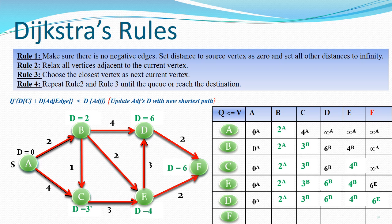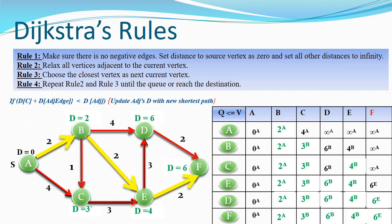We copy all existing values and this gives us our final shortest path. The shortest path from A to F is 6. Tracing it back: F came from E, E came from B, and B came from A. So the path is A → B → E → F. We have visited all vertices and found all shortest paths in this graph.